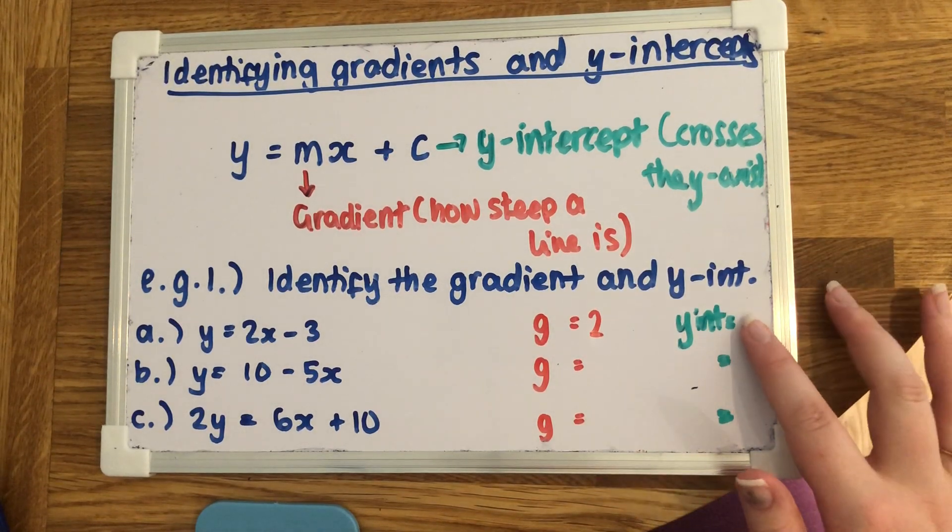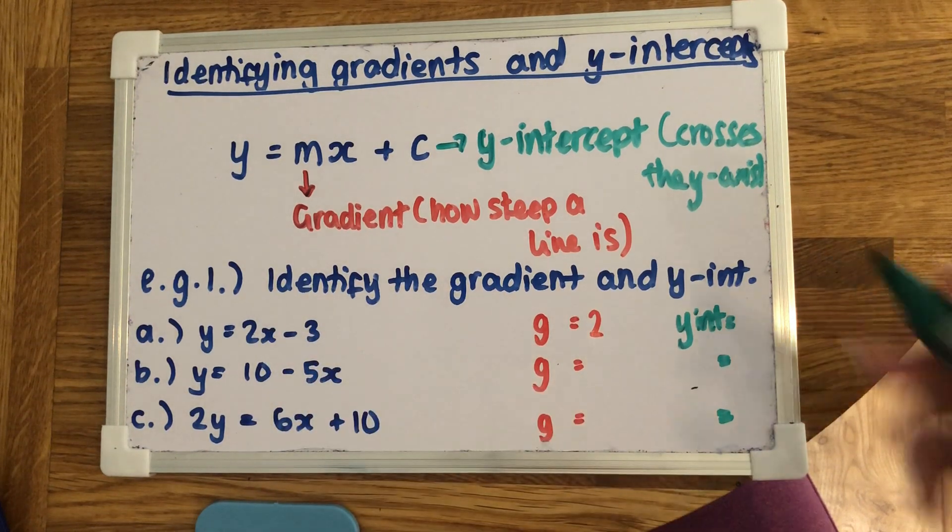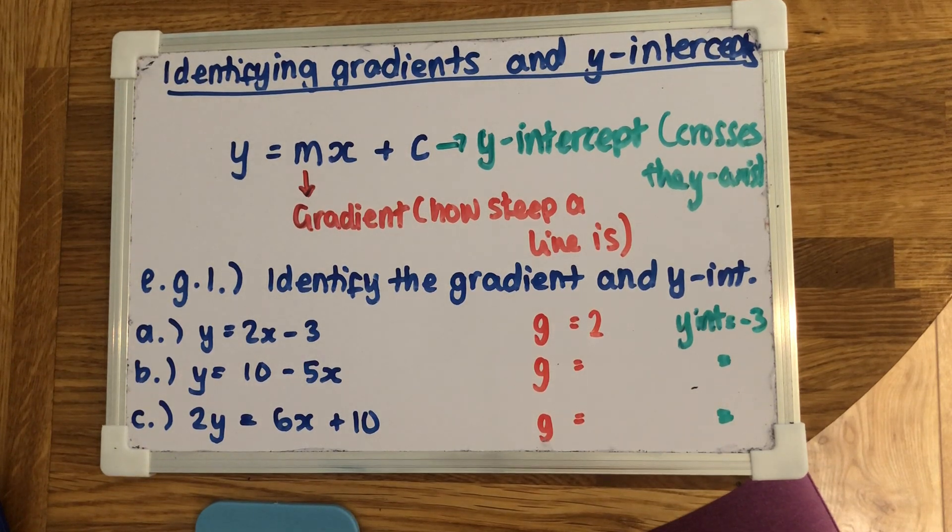And the y-intercept is the number that's added or subtracted on the end. So the number on its own is this negative 3. So the y-intercept will be negative 3. And that's all you have to do.